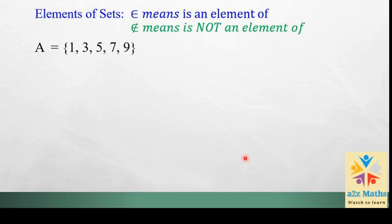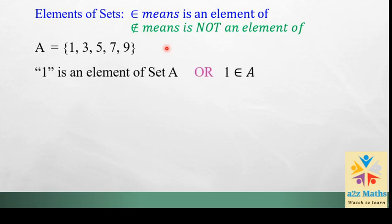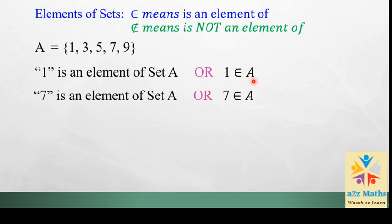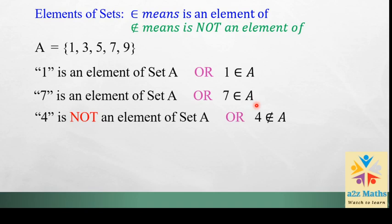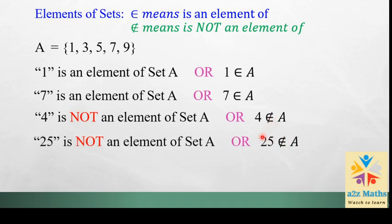Now, elements of a set. When we talk about elements of a set, the first thing to know is this symbol — it means 'an element of.' If we put a cross upon the symbol, it means 'is not an element of the set.' For example, with set A = {1, 3, 5, 7, 9}: 1 ∈ A means one is an element of A; 7 ∈ A means seven is an element of A; 4 ∉ A means four is not an element of A; and 25 ∉ A means 25 is not an element of A.